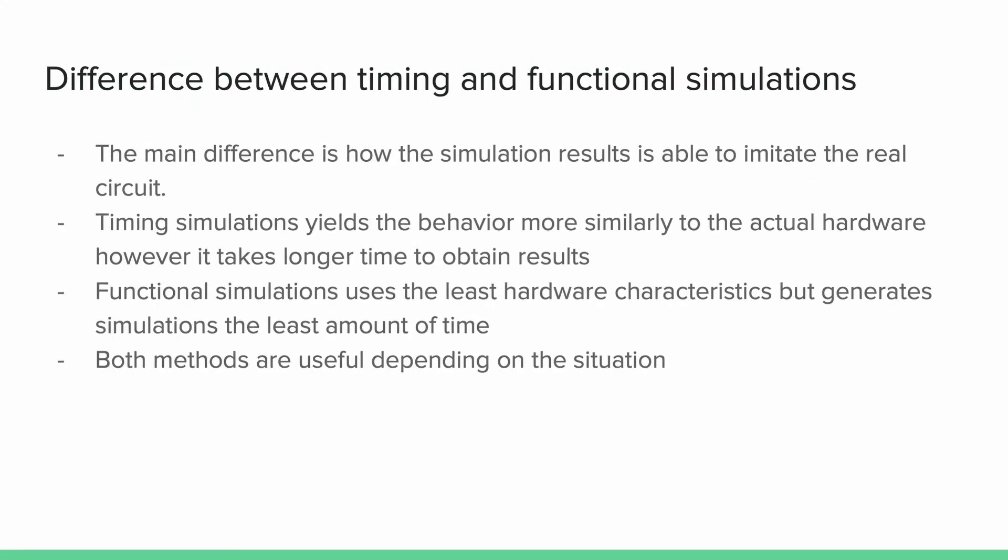What are the differences between timing and functional simulations? The main difference is how the simulation results are able to imitate the actual circuit. Timing simulations yield behavior more similarly to the actual hardware; however, this will take longer time to obtain results. Functional simulations use the least amount of time; however, they imitate the least characteristics of the actual hardware. Both of these methods are useful depending on the specific situation.